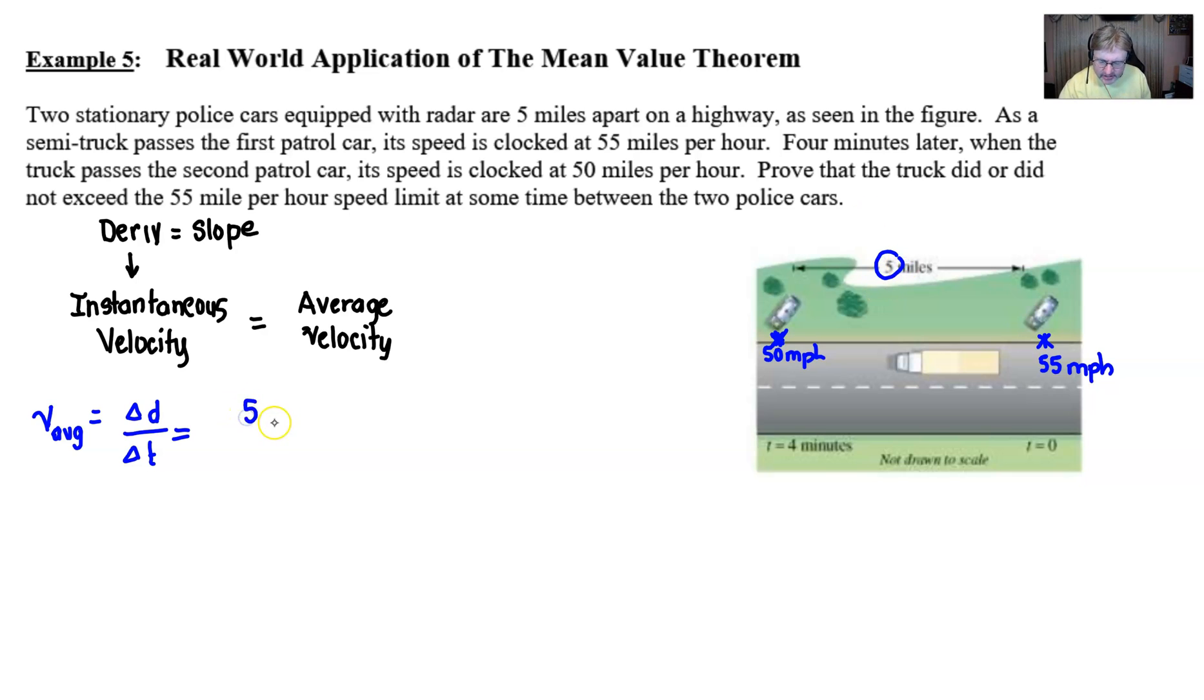So you've got your change in position at five miles. And then we do the same thing with our time. Well, the change in time between those two positions is four minutes. However, that's a bit of a problem, because we don't really relate speed in terms of miles per minute. Our speed limit signs are always in miles per hour, at least here in the United States. So we're going to have to do a little bit of conversion.